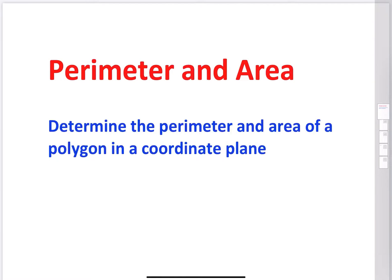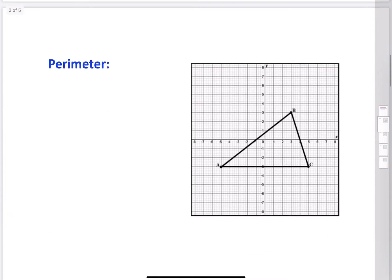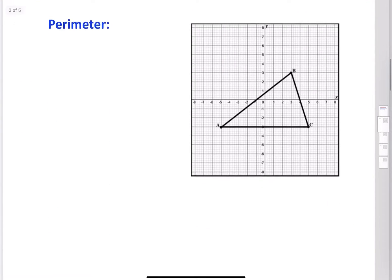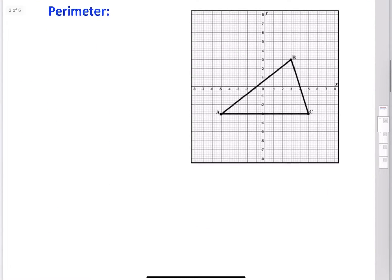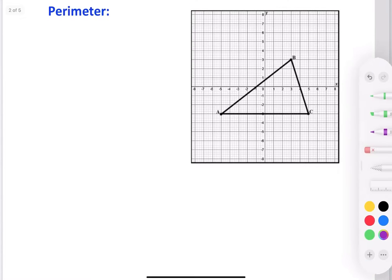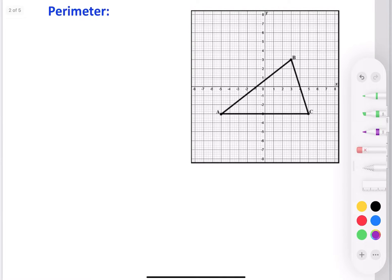Hey everyone, Teacher Chang here. Today we're going to talk about perimeter and area of a polygon in a coordinate plane. We're going to start off with a simple one — a triangle — and take a look at the perimeter. Remember, perimeter just means to add up all of the sides, so we want to figure out the length of each side and then add them up together.